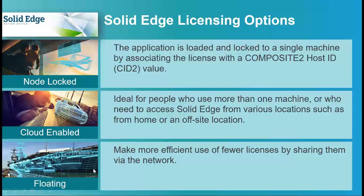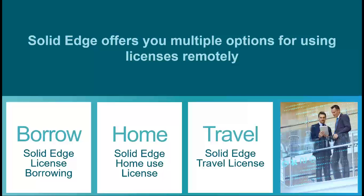If your internet isn't fast, or if you're unable to VPN, then you probably want to take into consideration these three options. With every production license, you get a home use and a travel license, and with floating licenses, you can borrow them. The license borrow allows you to borrow a license from the pool at work and take it home on your machine.